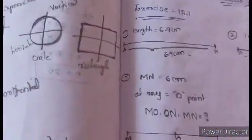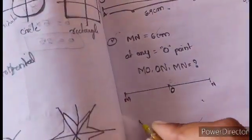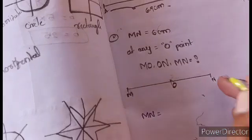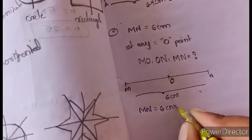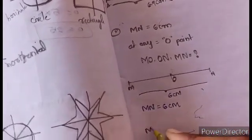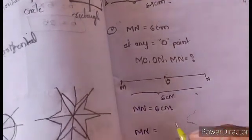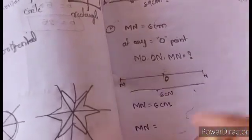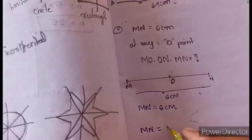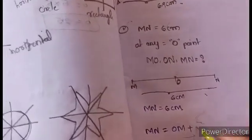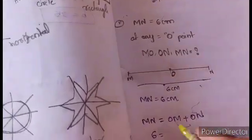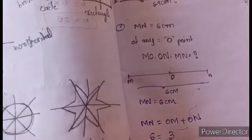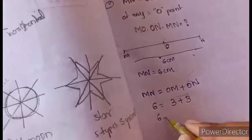We will find out M and N on the same line. MN is equal to 6 centimeters. So MN is equal to OM plus ON. The total MN is equal to 6 centimeters.